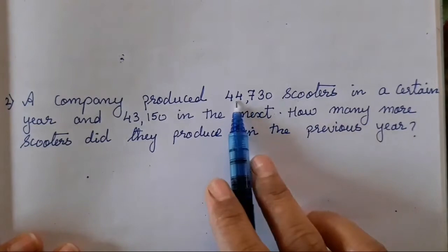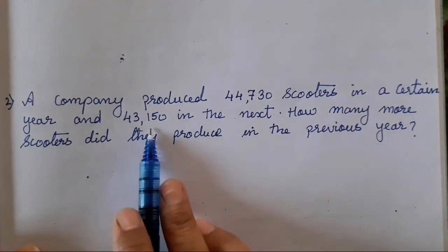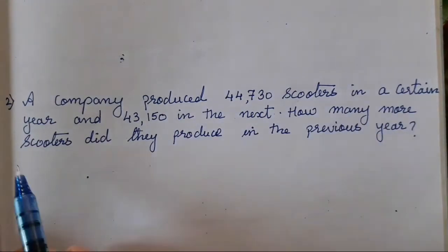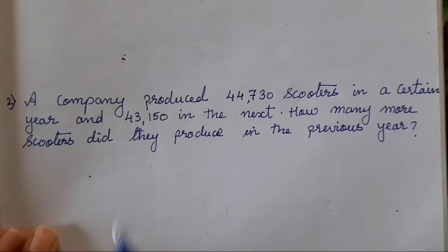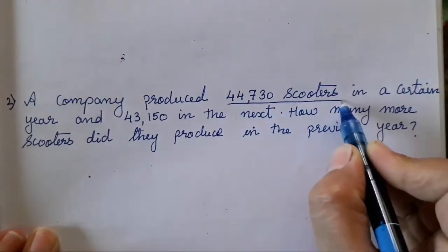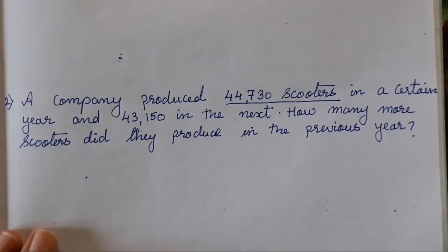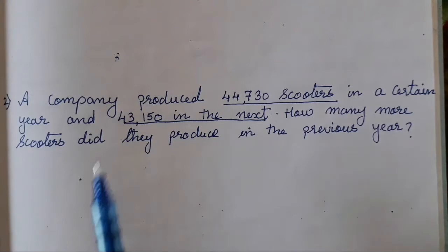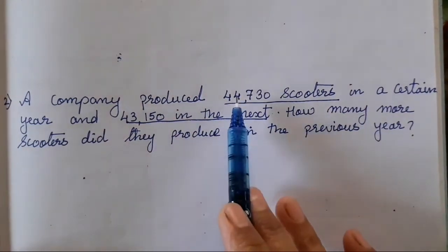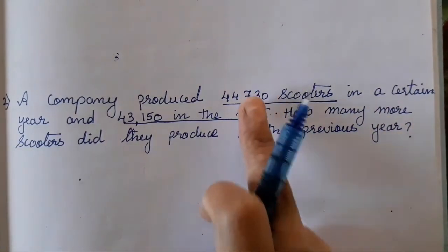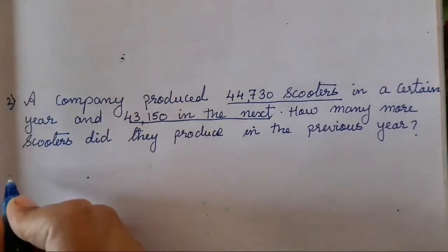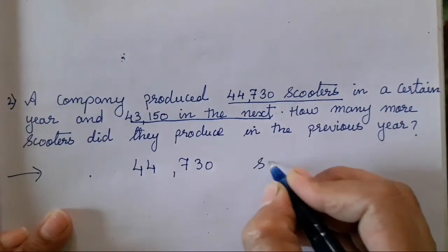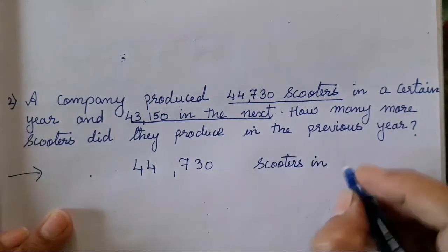A certain company produces 44,730 scooters in a certain year and 43,150 in the next year. How many more scooters did they produce in the previous year? So this much is what they produced in a certain year and this much in the next year. They ask how many more did they produce in the previous year — this amount is greater. Always remember for subtraction, write the greater number first and then the smaller number. So first we will write 44,730 — scooters in previous year.